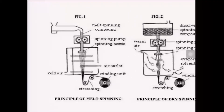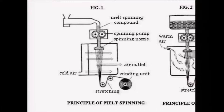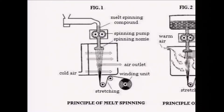In the melt spinning system, the polymer is fed into a hopper, then goes through the extruder. It passes through the melt spinning pump zone where filtration occurs — this unit is called the spinning pump. The polymeric fluid exits through the spinneret unit and is allowed to solidify with the help of cold air. After solidification, the filaments are stretched for better alignment and stability, then wound onto the winding unit.